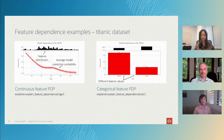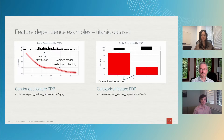We can also dig deeper to look at how features are actually changing the model's predictions on average using partial dependence plots. On the left, you can see an example for a continuous feature — age. The smaller the feature value, the younger the person, the more likely the model believes they'll survive.